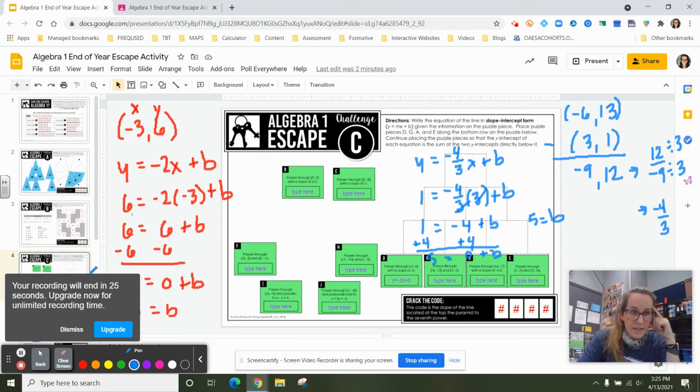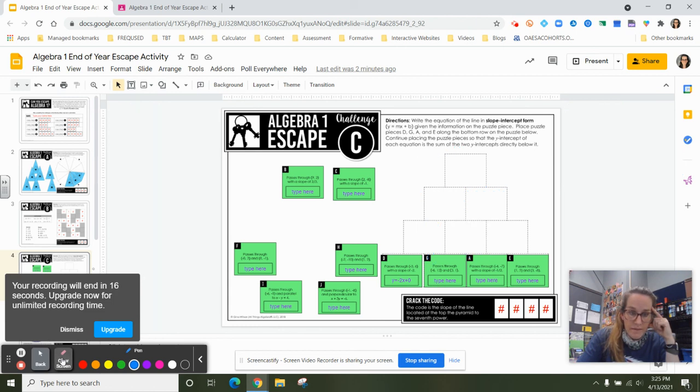All right. Let's see here. 5 is equal to b. So I have y equals negative 4 thirds x plus 5.